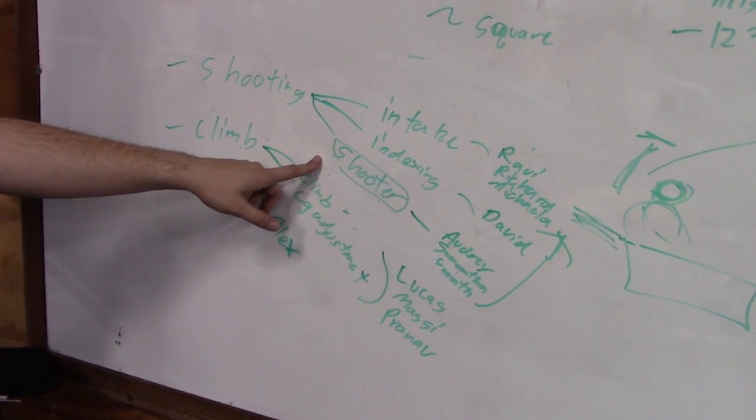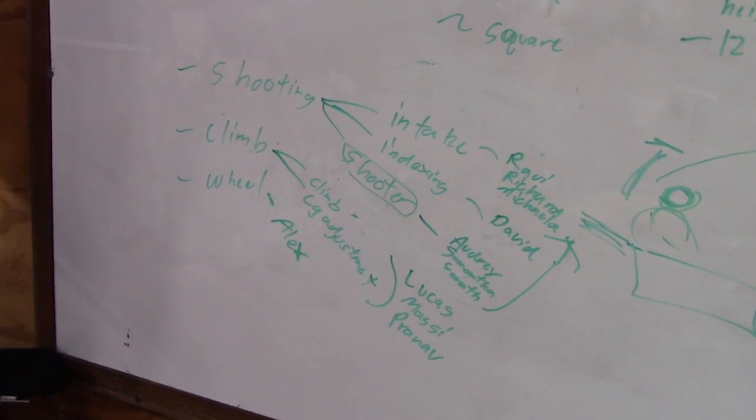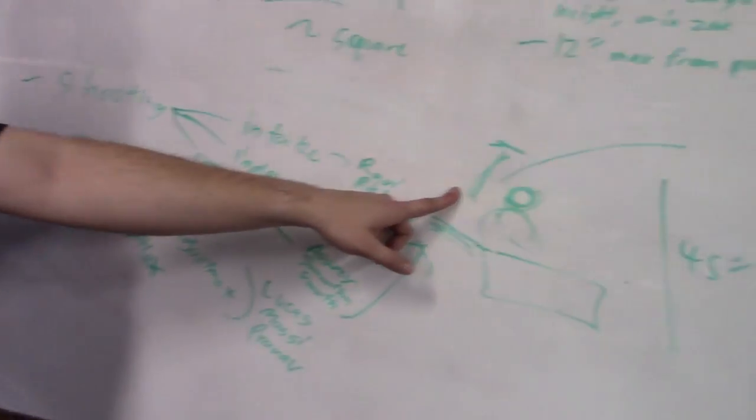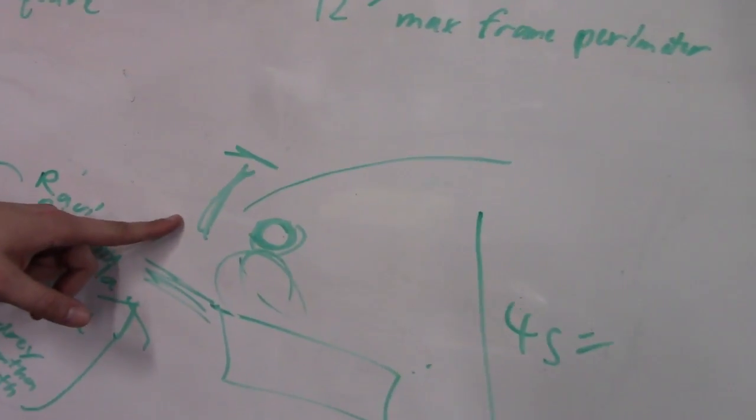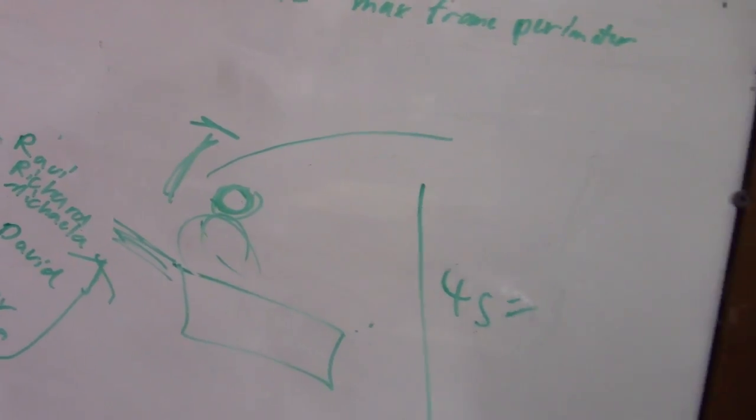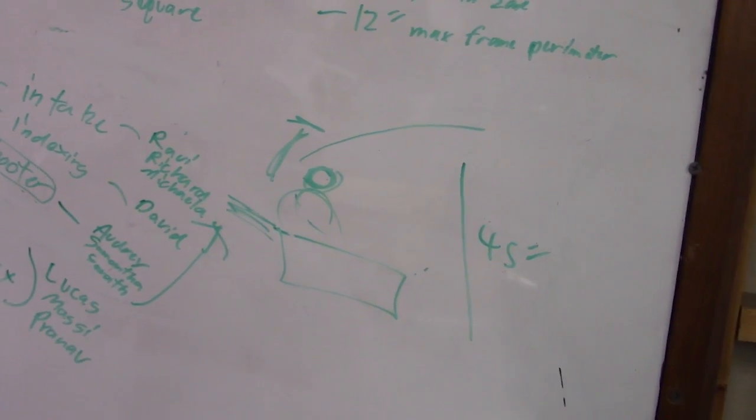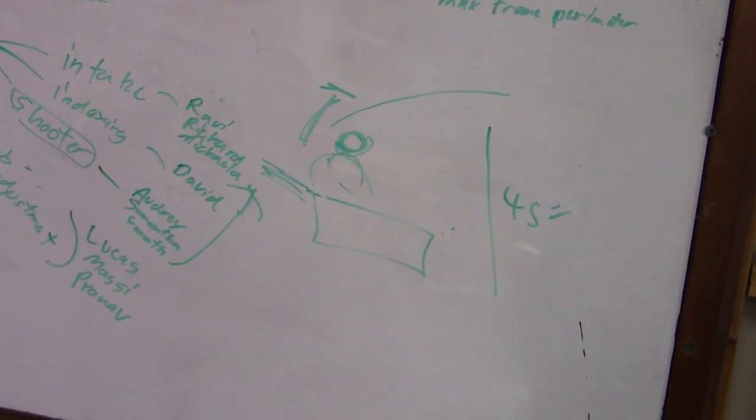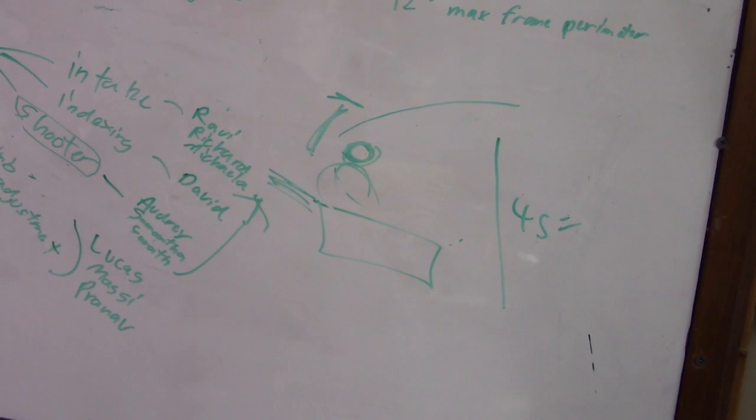Then the shooter, right now we're starting off with a hooded flywheel shooter just like this on the board and we debated a couple of different types. We're starting with this one. We're definitely probably going to try a dual wheel shooter, wheels on each side if we don't like how the flywheel is working.